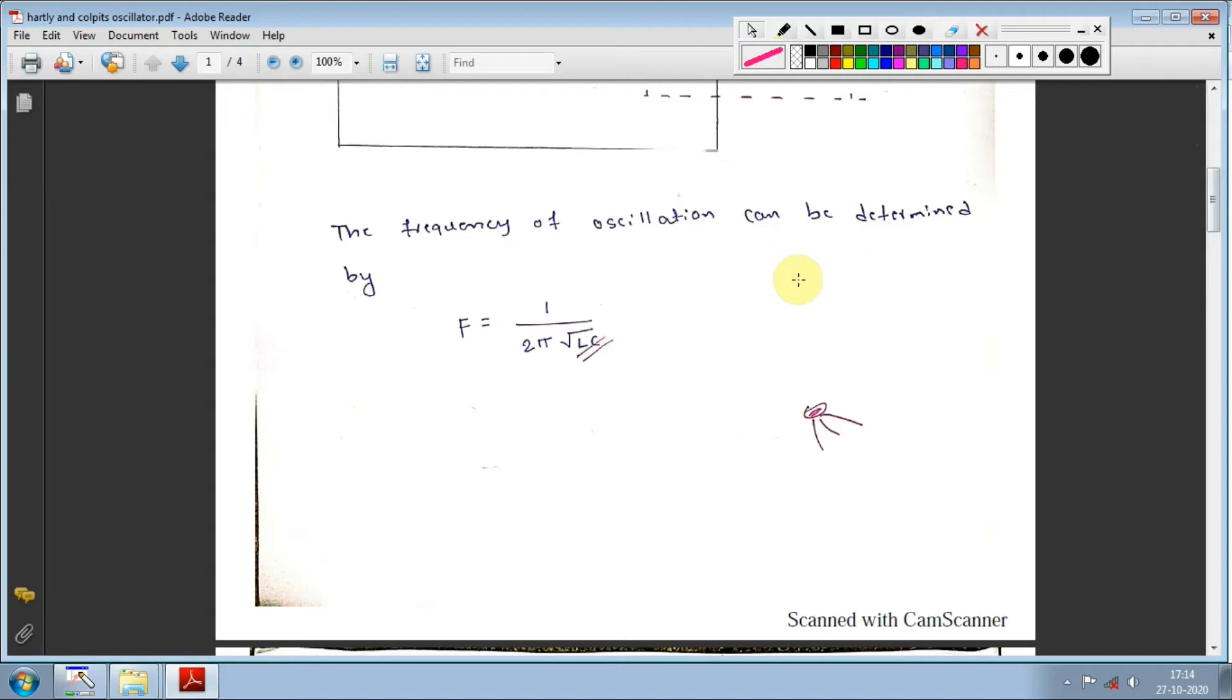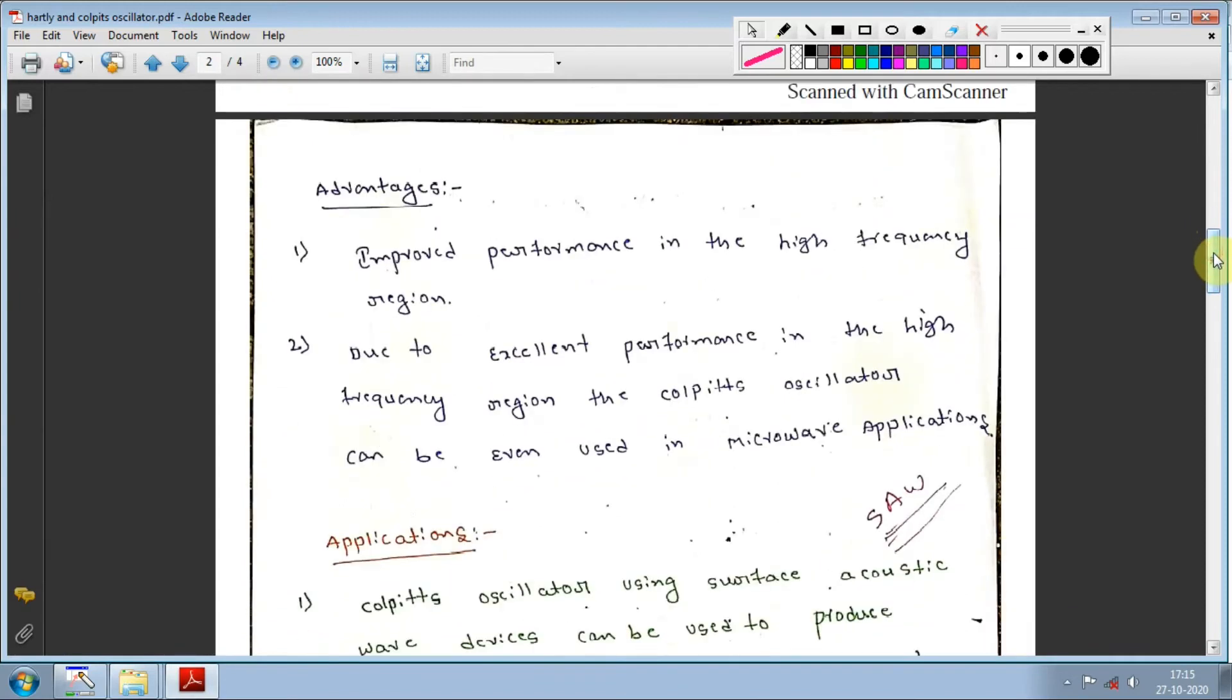The frequency of oscillation can be determined by f = 1/(2π√LC). This is the resonant frequency - the output frequency determined by the inductor and capacitor values. For example, if inductor is 10 henry and capacitor is 10 microfarad, you might get 10 megahertz oscillation frequency. Remember this formula: f = 1/(2π√LC), as it's asked in MCQ questions.